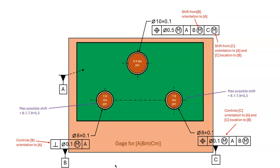The 8.1 hole fitting around the 7.8 pin will allow shift of 0.3. At datum feature C, the gauge will have a fixed size pin at size 7.8. That's equal to the smallest allowable hole of 7.9 minus the position tolerance of 0.1. The maximum possible shift occurs when the datum hole is at its largest allowable size of 8.1 and has no perpendicularity error and no position error. The 8.1 hole fitting around the 7.8 pin will allow shift of 0.3.